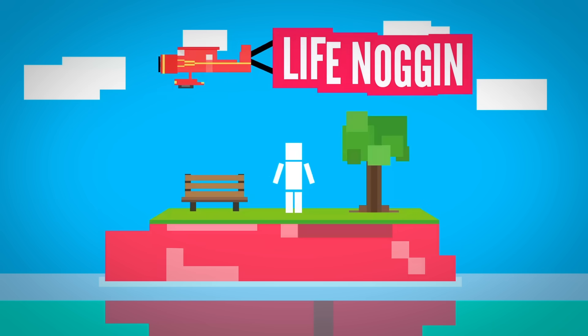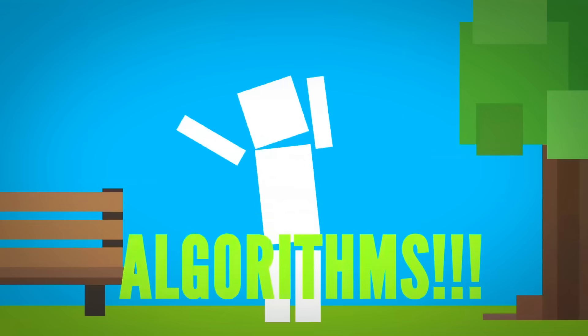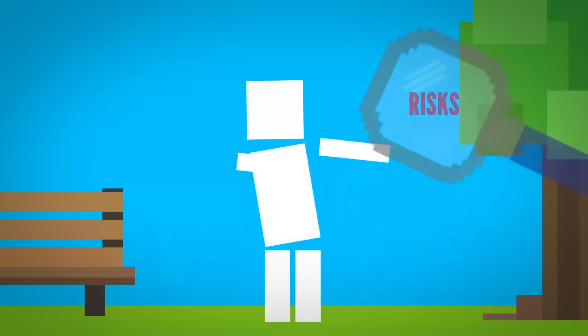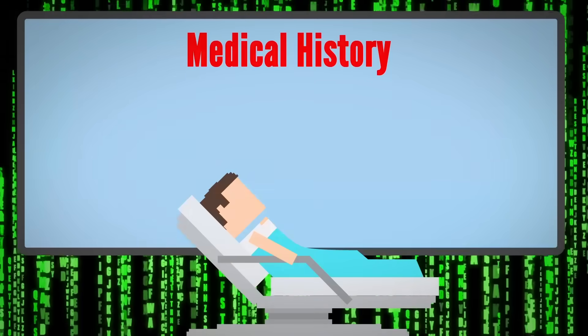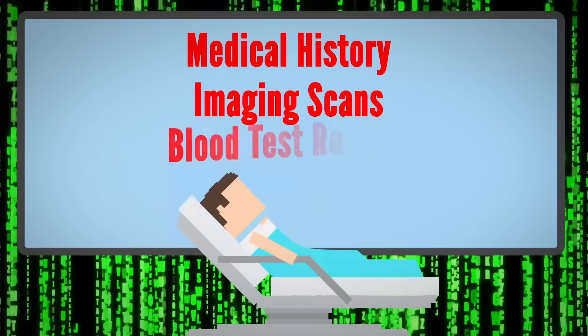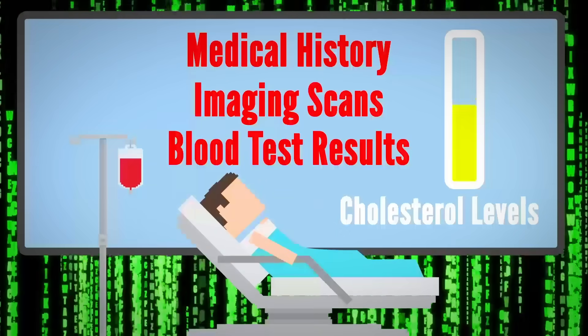Hey there! Welcome to Life Noggin. These algorithms can assess those risks by analyzing patient information like medical history, imaging scans, and the results of blood tests, such as cholesterol levels.